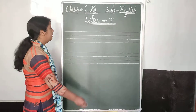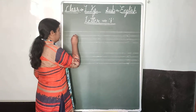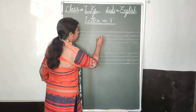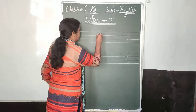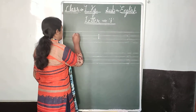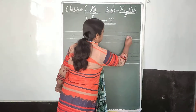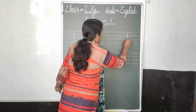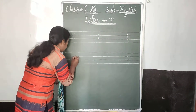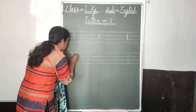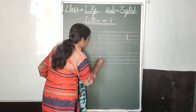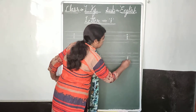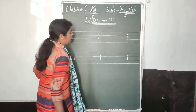Now we will write letter I. I. I. I. Next line. I. I. I. I. I for ice cream.